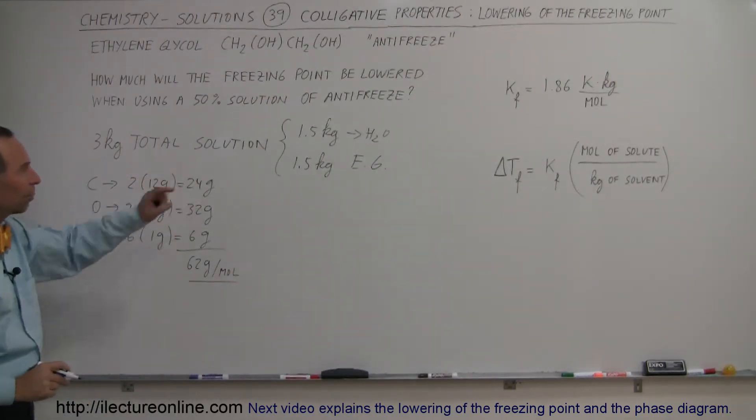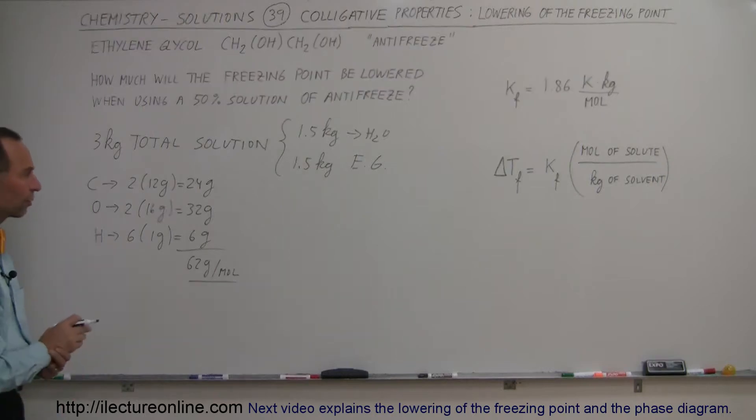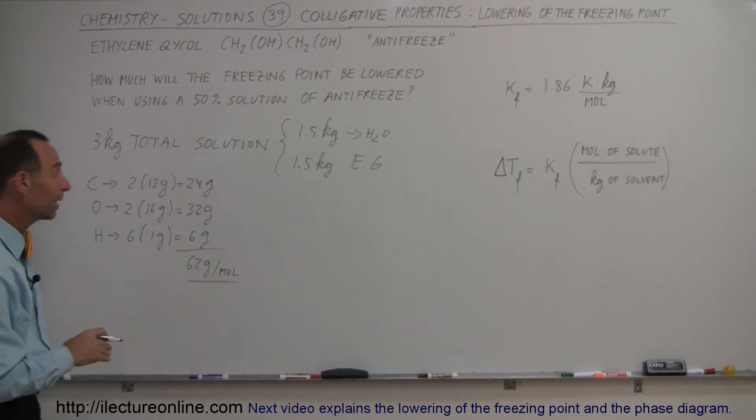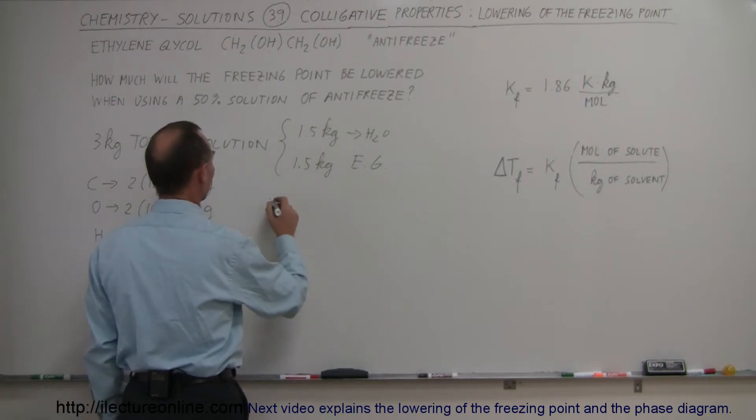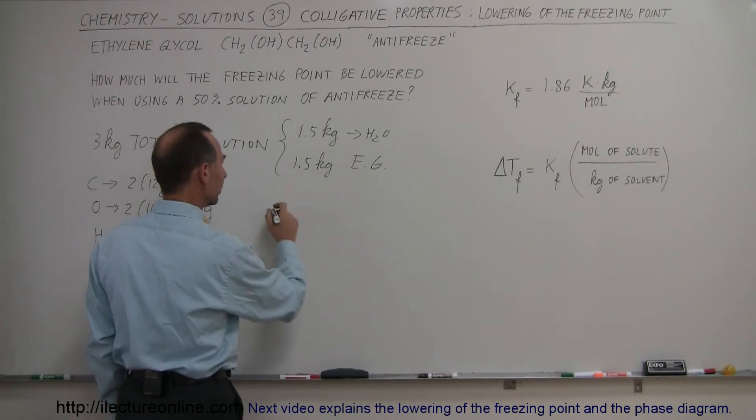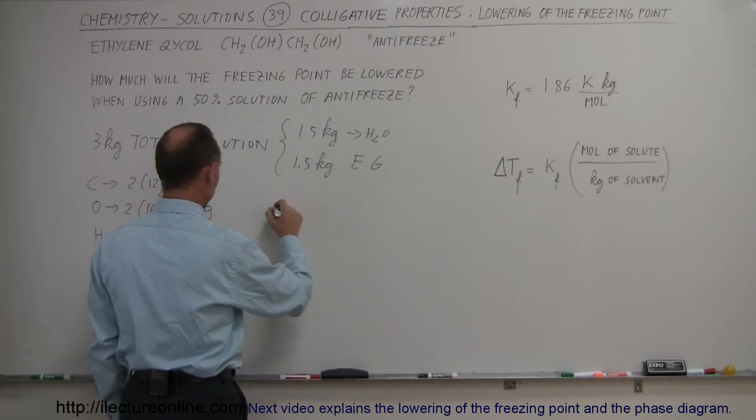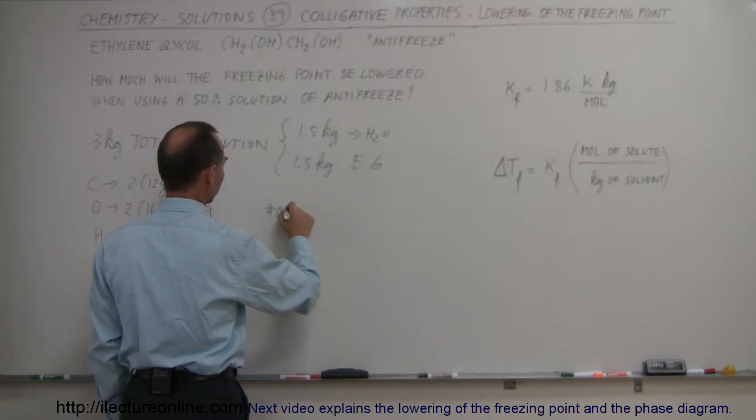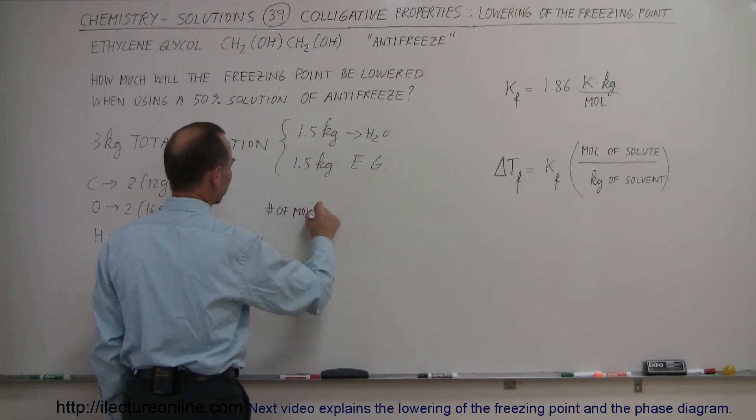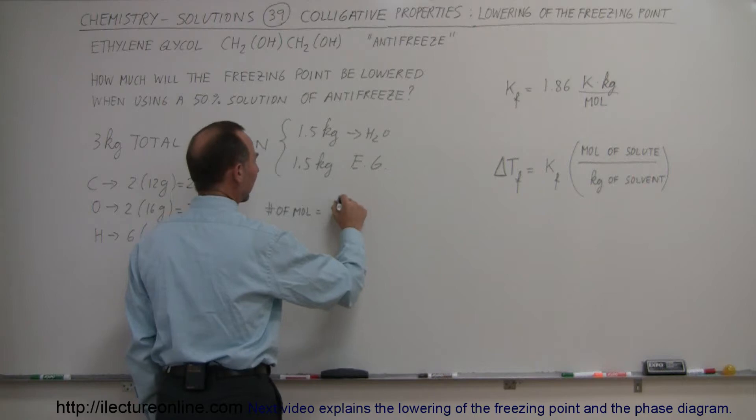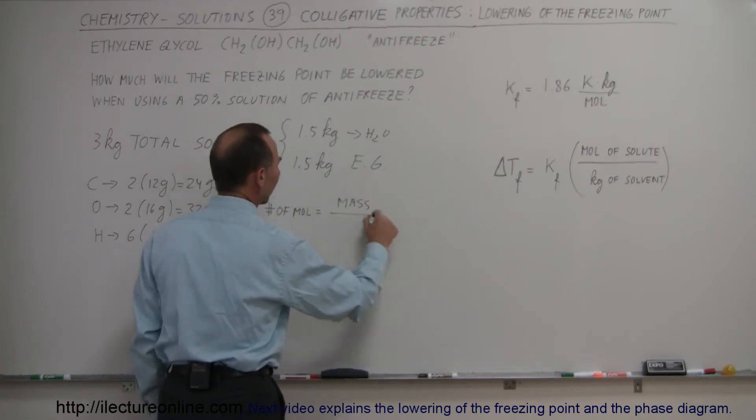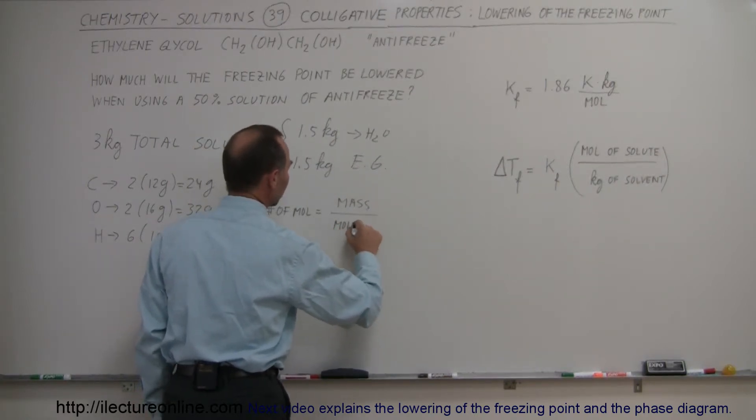Since we're adding 1.5 kilograms, which is 1,500 grams, we can find out how many moles of ethylene glycol we have. It's always best to write out the equation. The number of moles is equal to the mass that we're adding divided by the molar mass of the solute.